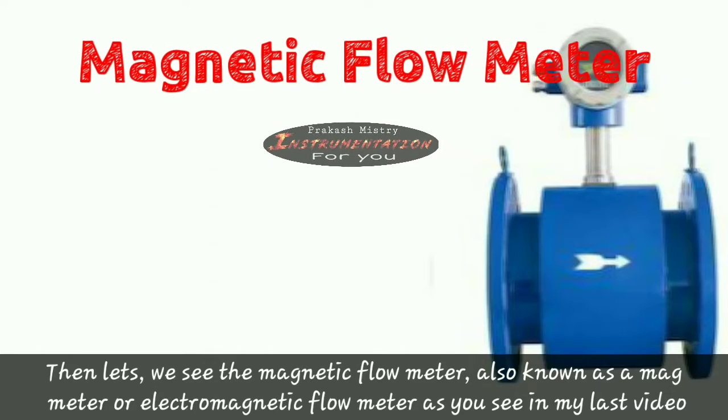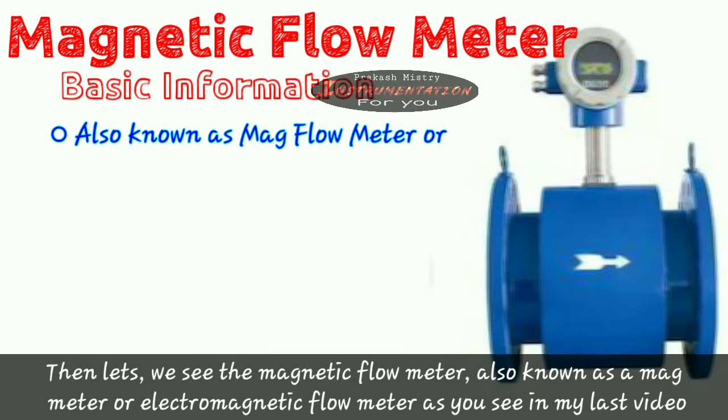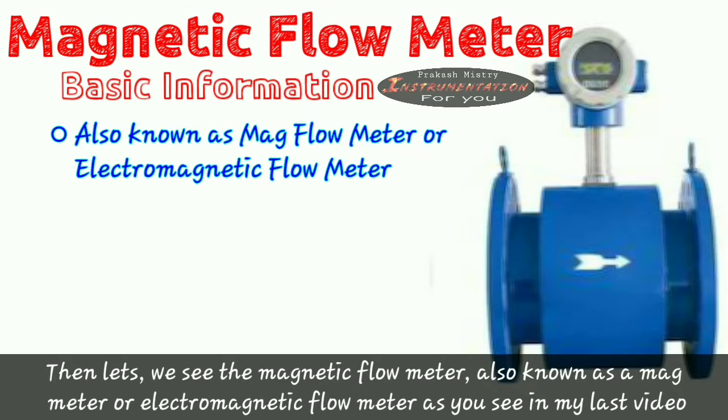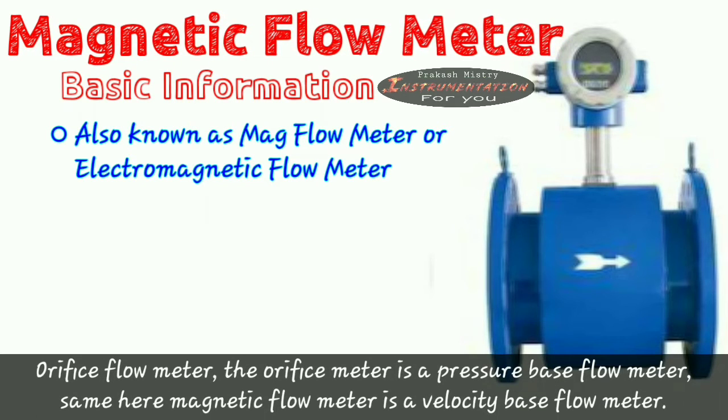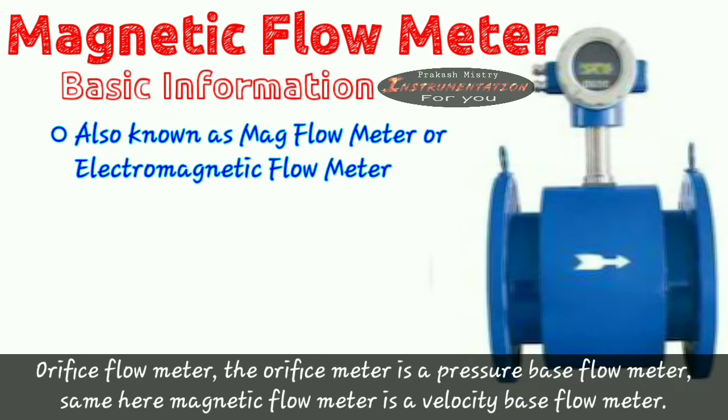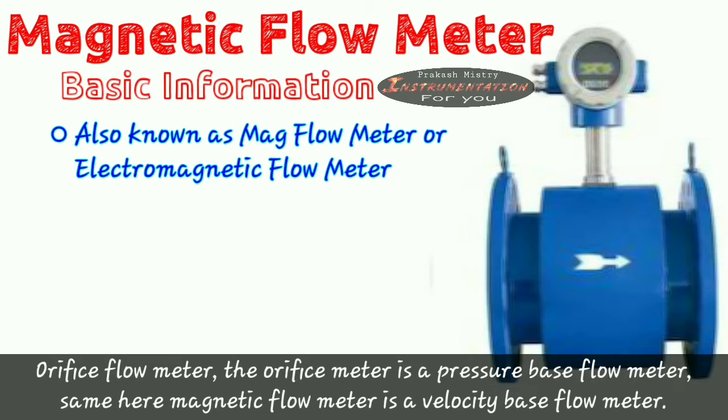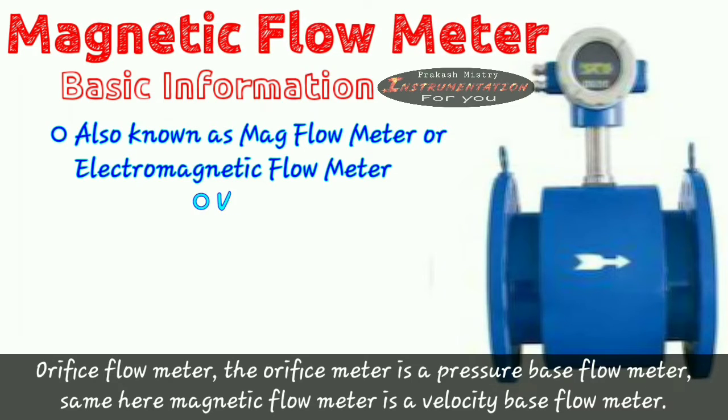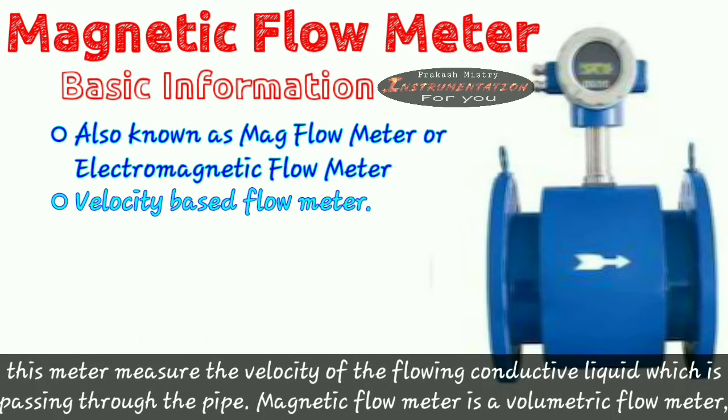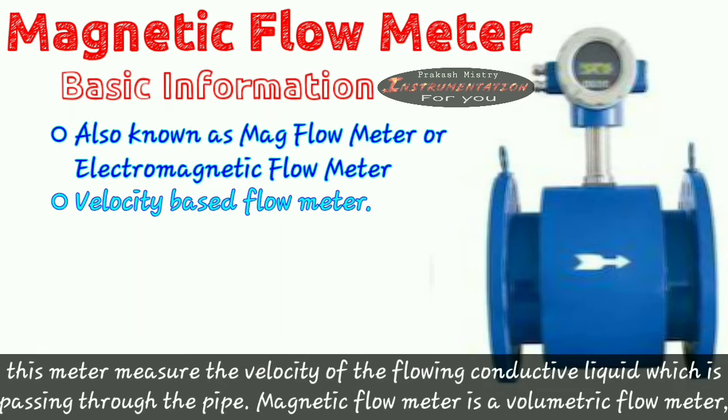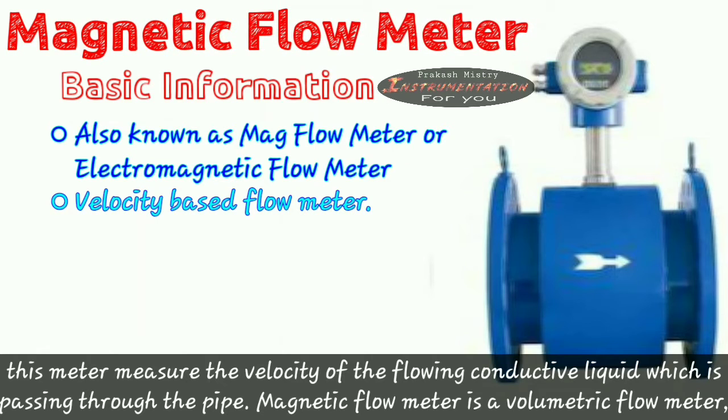Let's see the magnetic flow meter, also known as a magmeter or electromagnetic flow meter. As you see in my last video, Orifice flow meter, the orifice meter is a pressure-based flow meter. Same here, magnetic flow meter is a velocity-based flow meter. This meter measures the velocity of the flowing conductive liquids which is passing through the pipe.